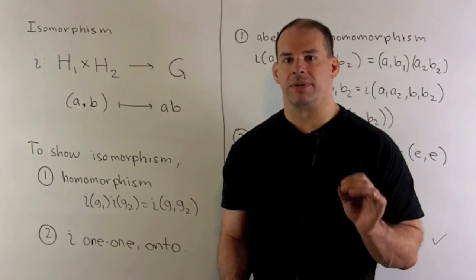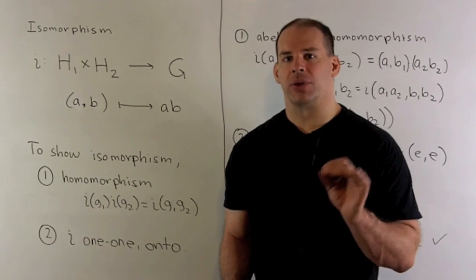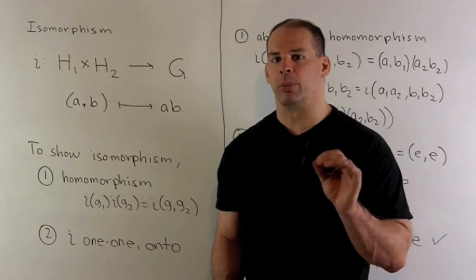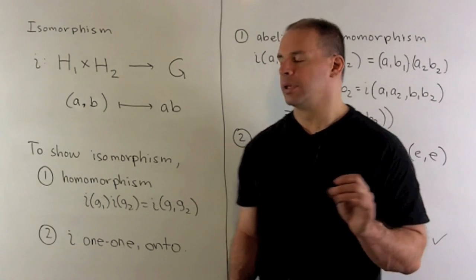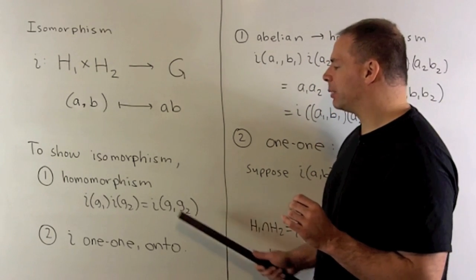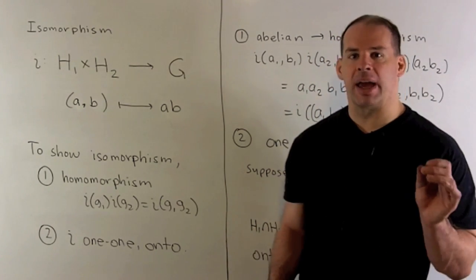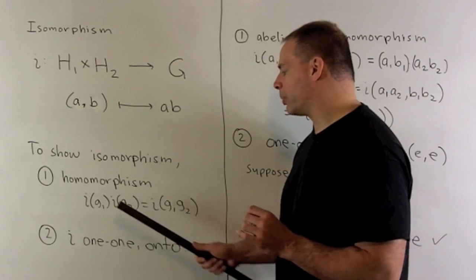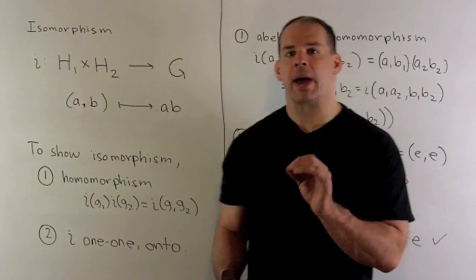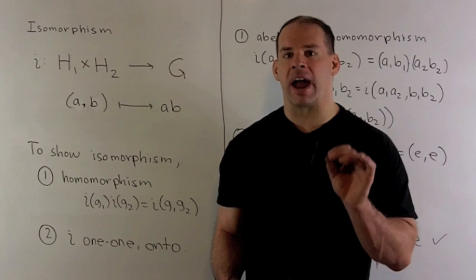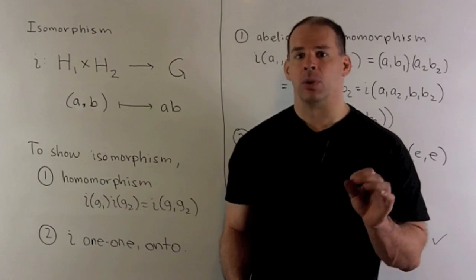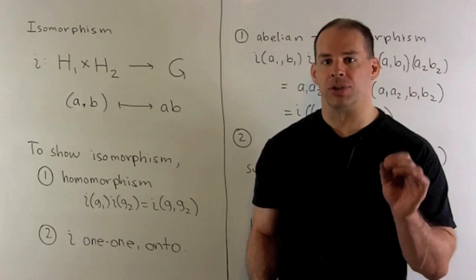Now to show that we have an isomorphism, first I want to show that i is a homomorphism. So that means i respects group multiplication. So if I take a product, apply i, I get the same answer as if I took each element, applied i, and then took the product. So it doesn't matter if I take the product before or after I apply i.